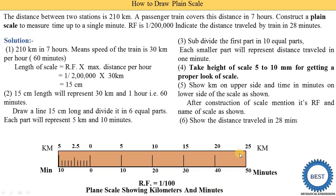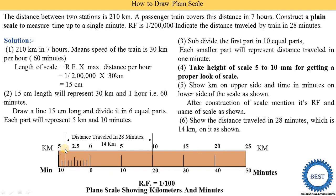We need to show the distance traveled by the train in 28 minutes. The time from 0 to 20, and the remaining 8 minutes are covered further. In 28 minutes, distance covered is from 0 to 10 kilometers, plus 8 small divisions where 1 division represents 0.5 kilometers. So 0.5 multiplied by 8 equals 4, and 10 plus 4 gives 14 kilometers.